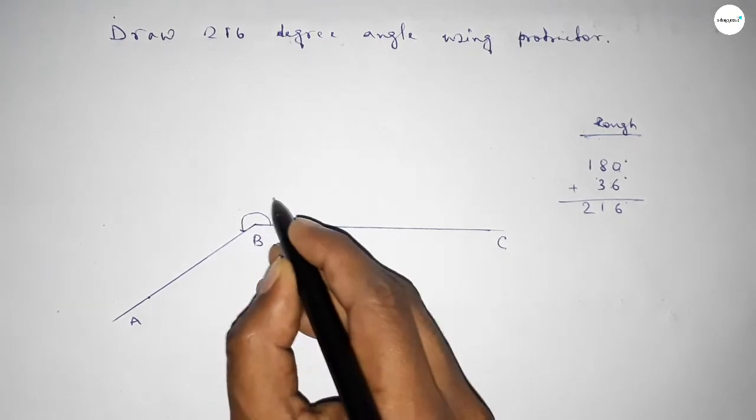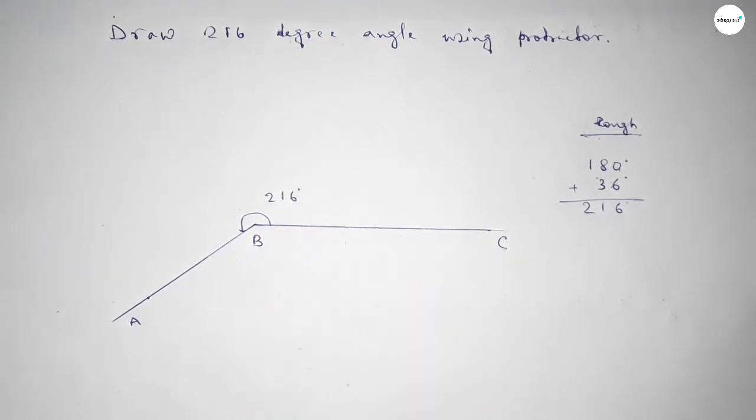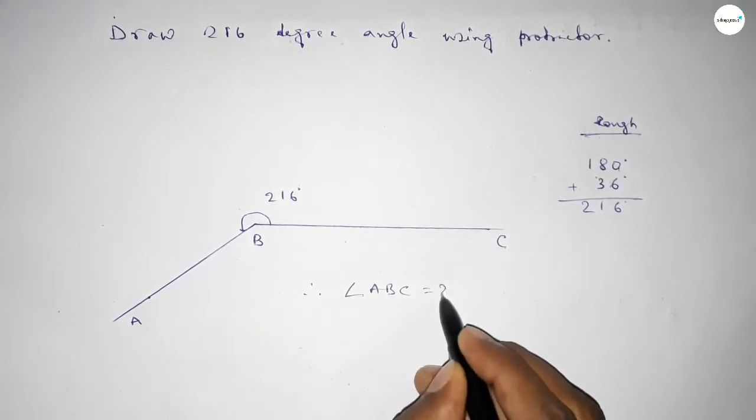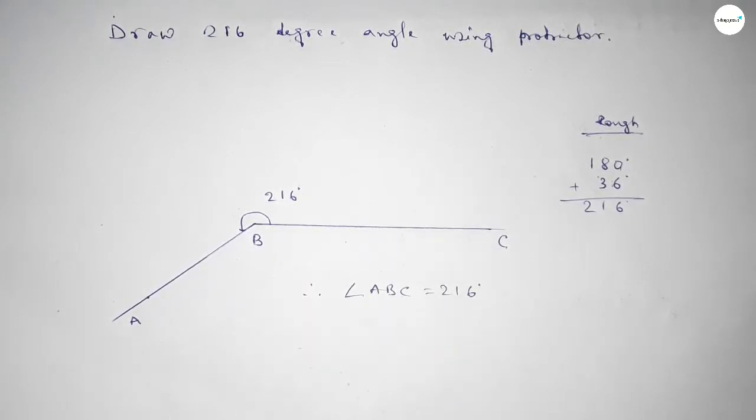So angle ABC up to this is 216 degree angle. Therefore, angle ABC equals to 216 degree angle. That's all, thanks for watching. Please share it with your friend. Thanks for watching.